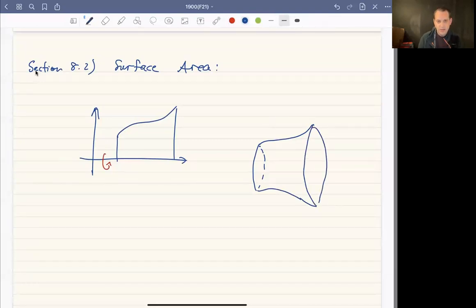I'm a terrible drawer, but that's what I'm looking at. And it's hollow on the inside. And then you want to know what's the area of that three-dimensional object, that surface of revolution is what they're called.